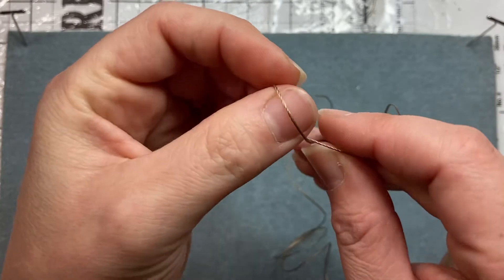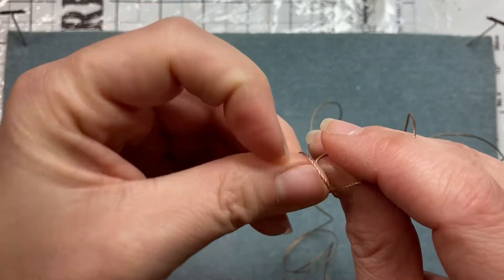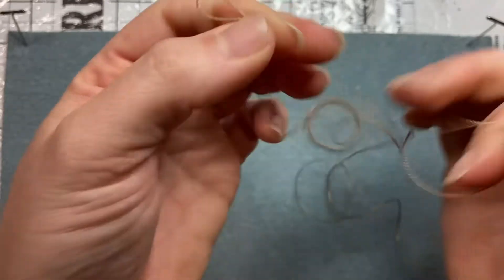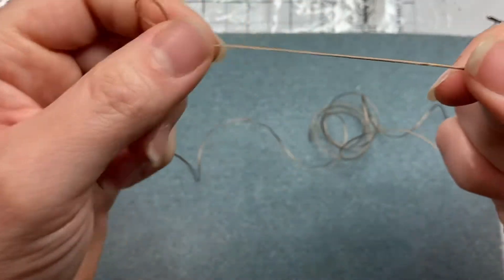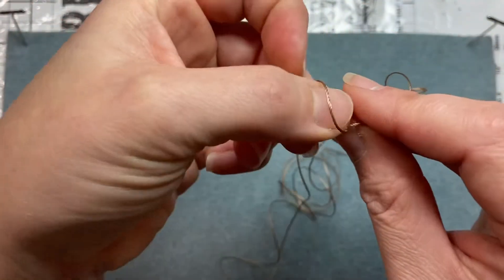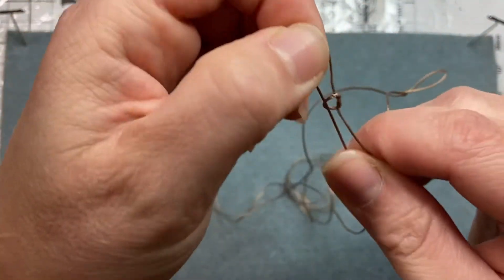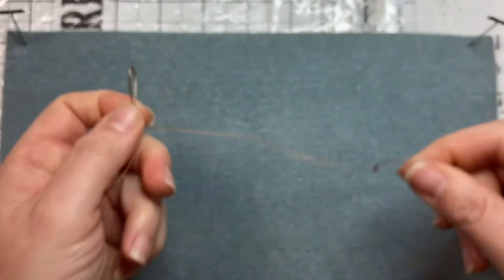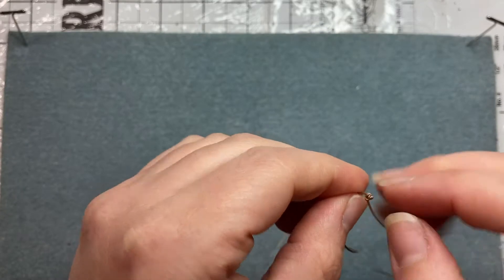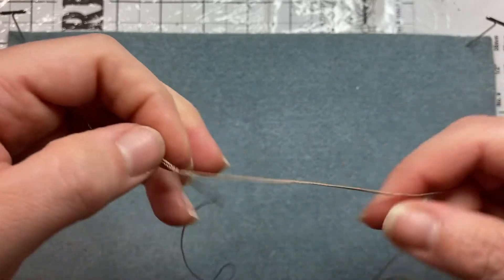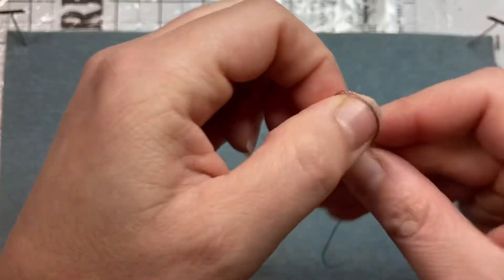So I'm just going to go over about an inch and create that slip knot. So you're going to wrap it around your thumb and pull. And then you're going to do the same thing about an inch over. You don't have to be exact here. It'll make sense once we start doing the next step.